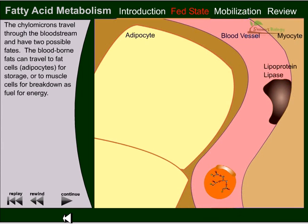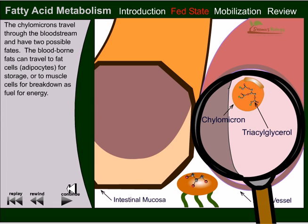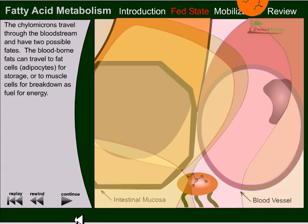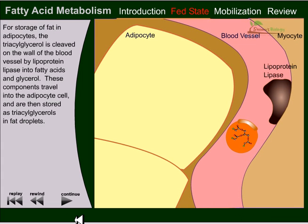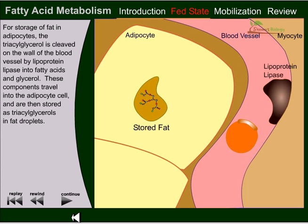The blood-borne fat can travel to fat cells — the adipose tissues — for storage, or to muscle cells for breakdown as a fuel source of energy. For storage of fat in adipose, the triacylglycerol is cleaved on the wall of the blood vessel by lipoprotein lipase into fatty acid and glycerol. These components travel into the adipose cells and are then stored as triacylglycerols in the fat droplets.